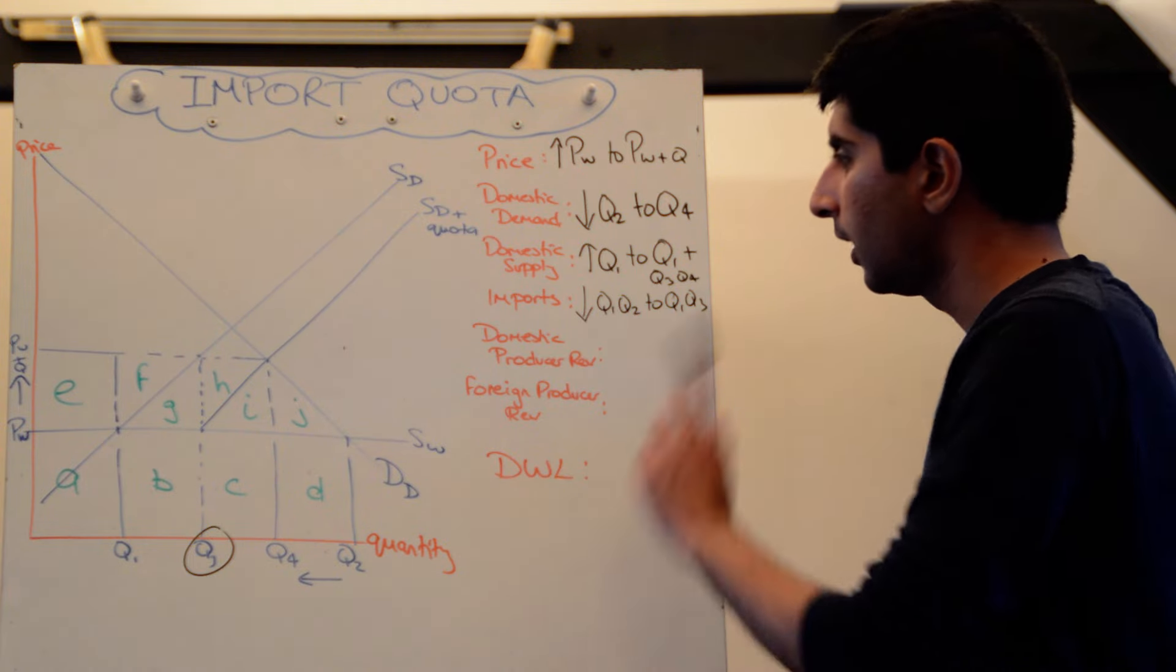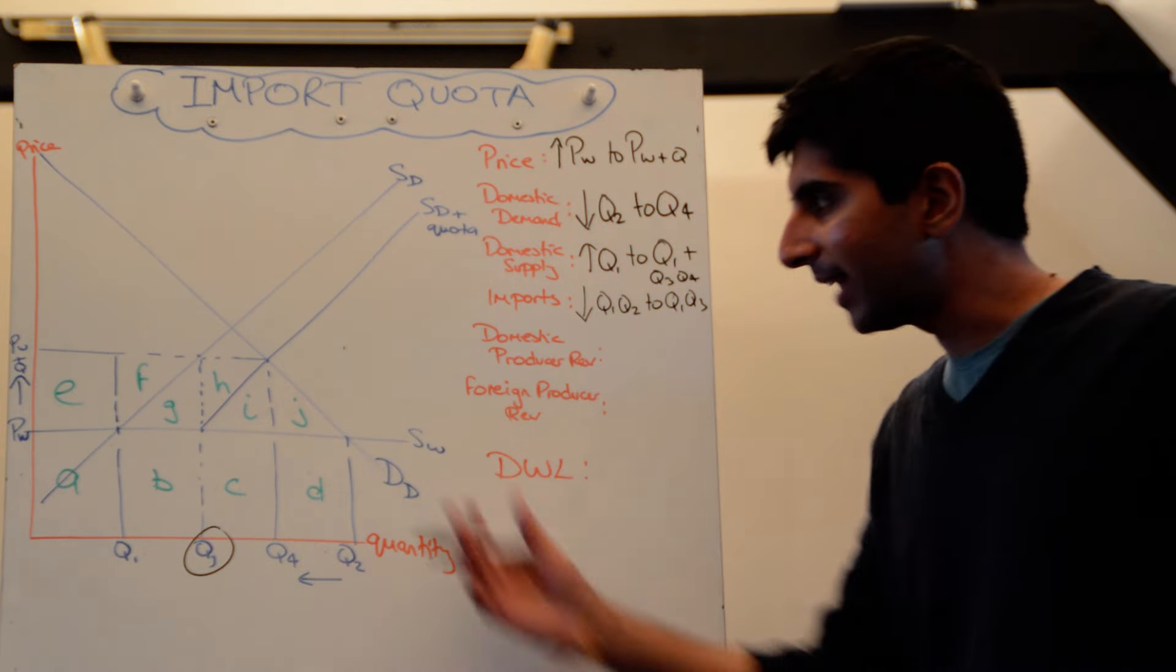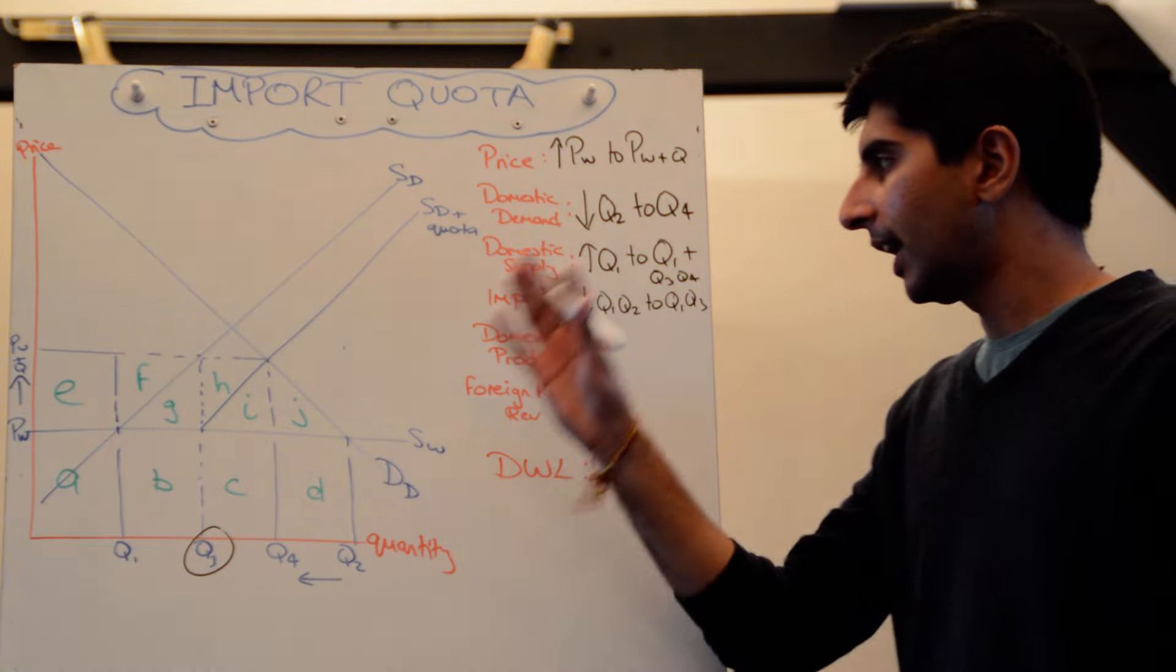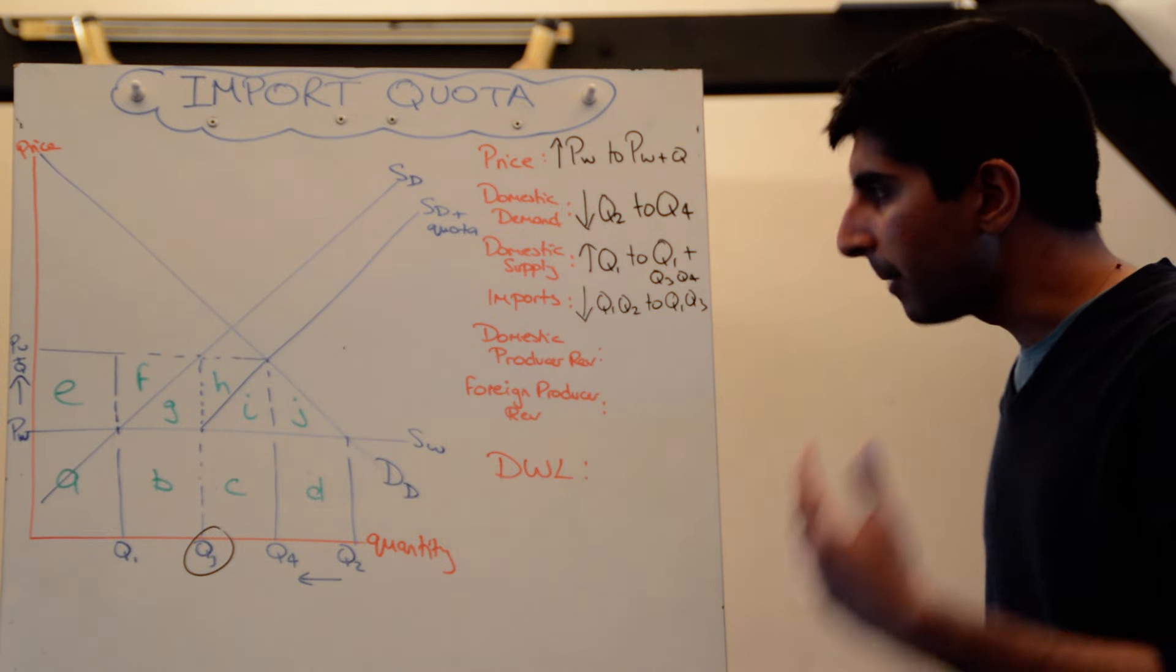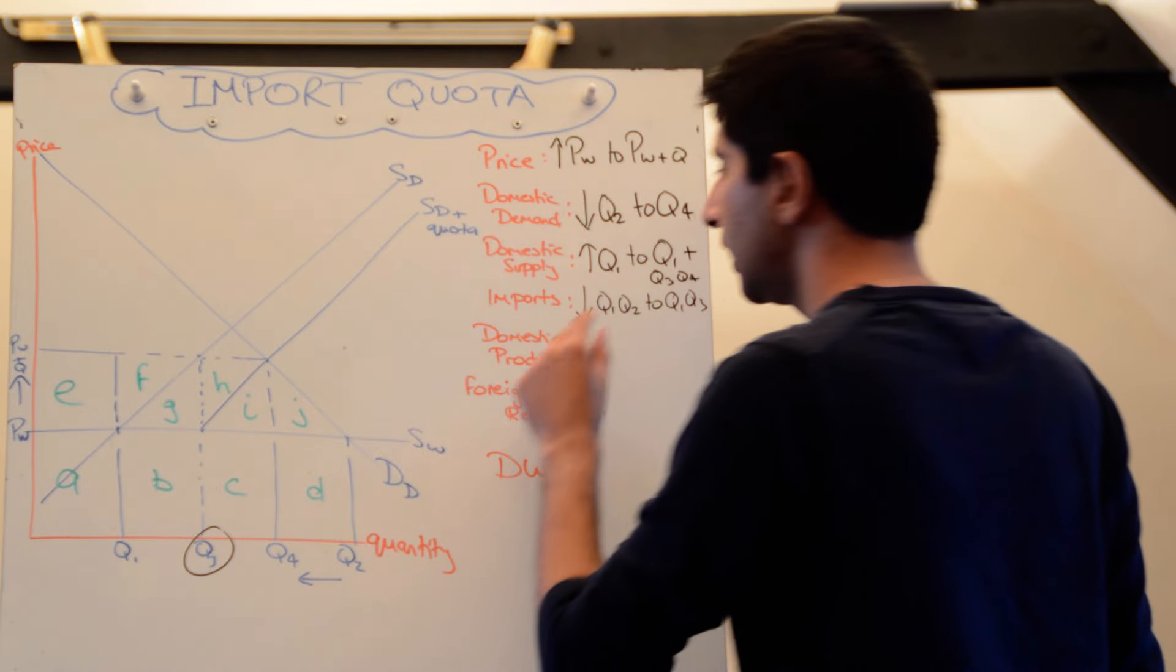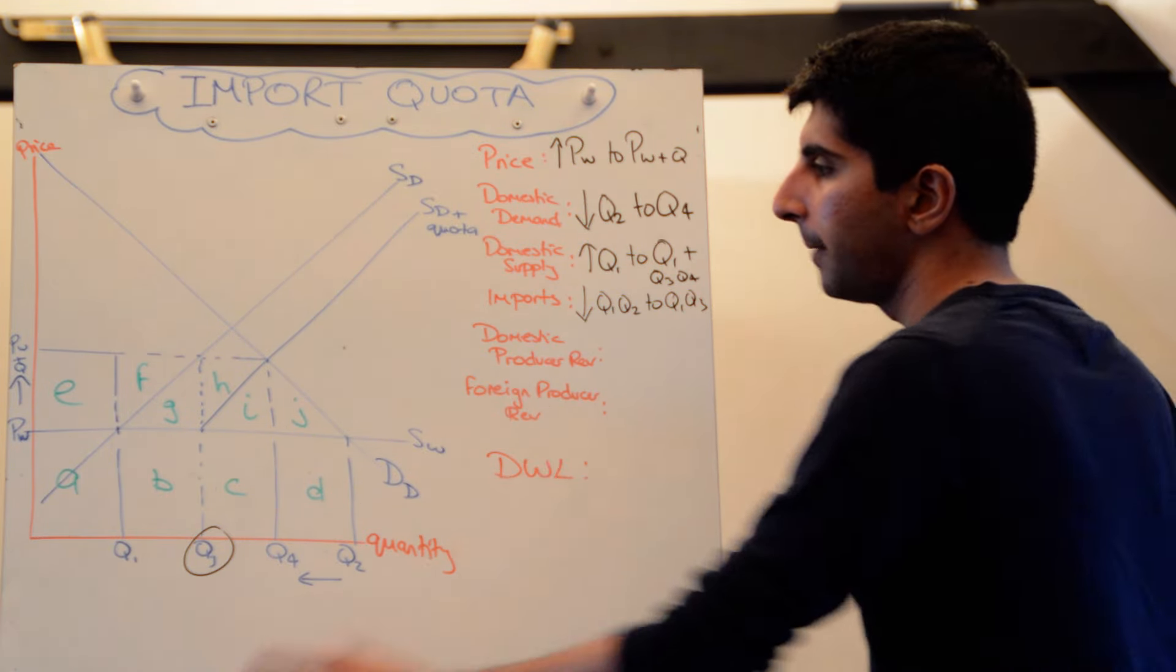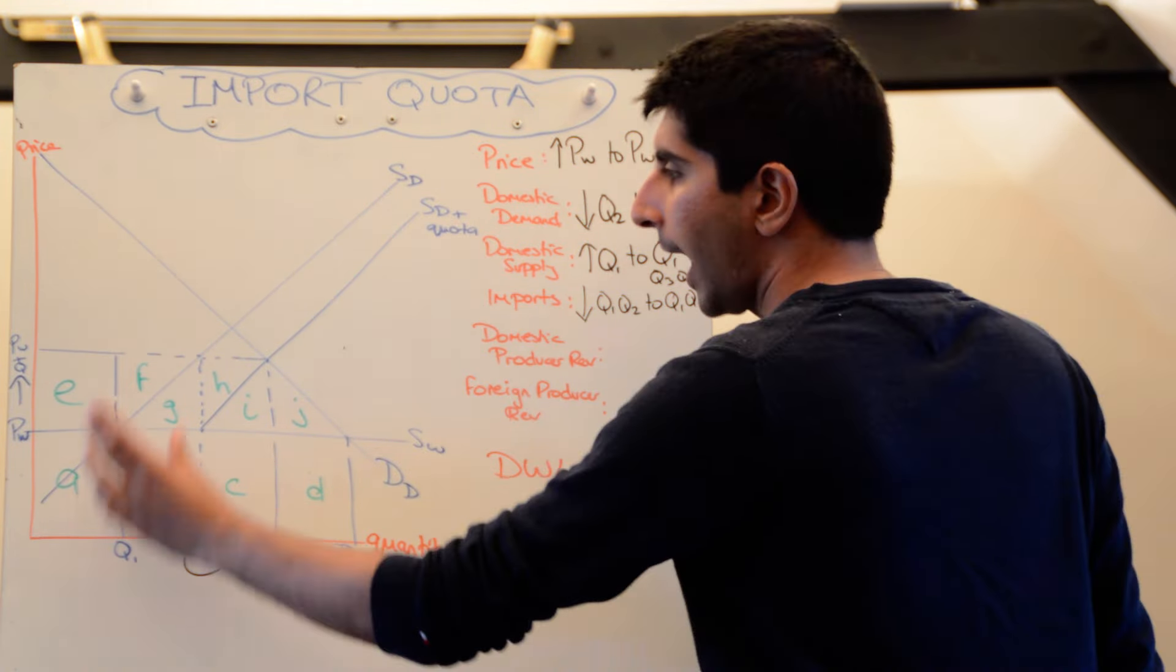Domestic producer revenue. Let's now look at some of these letters. Again, I'll put the alphabet on here. It looks complicated. It's actually not if you understand what you're doing. So domestic producer revenue. Initially they were only selling Q1 units, weren't they? And they were getting a price of Pw. So initially their revenue was just A.